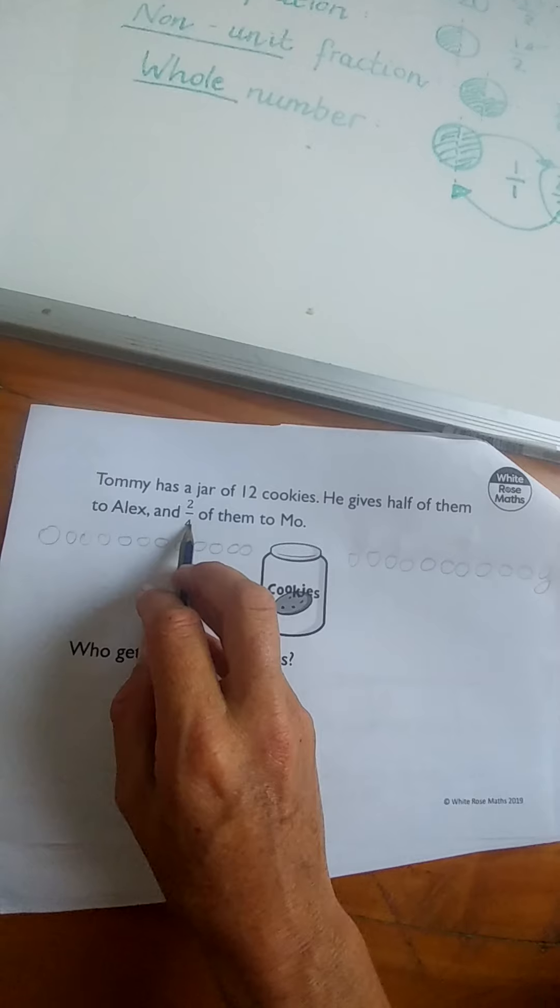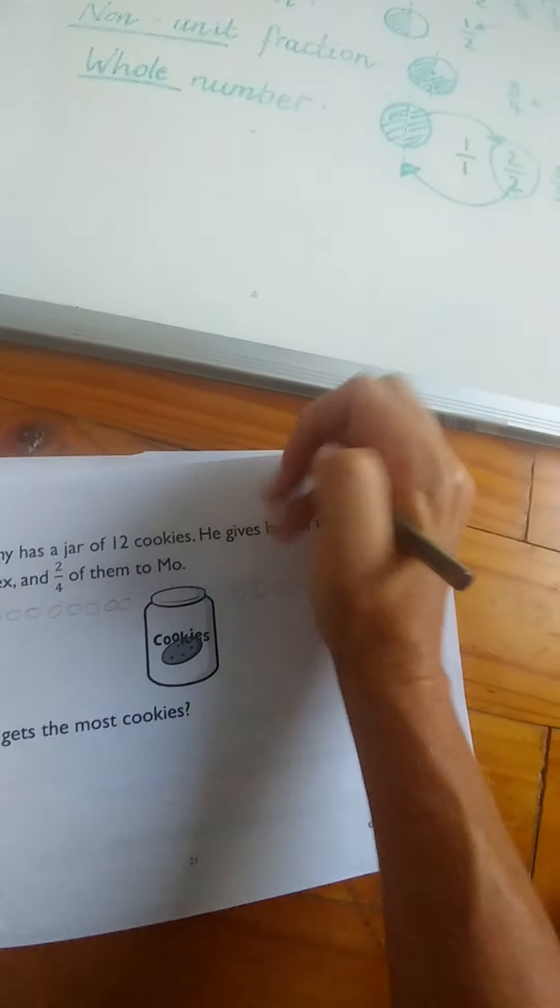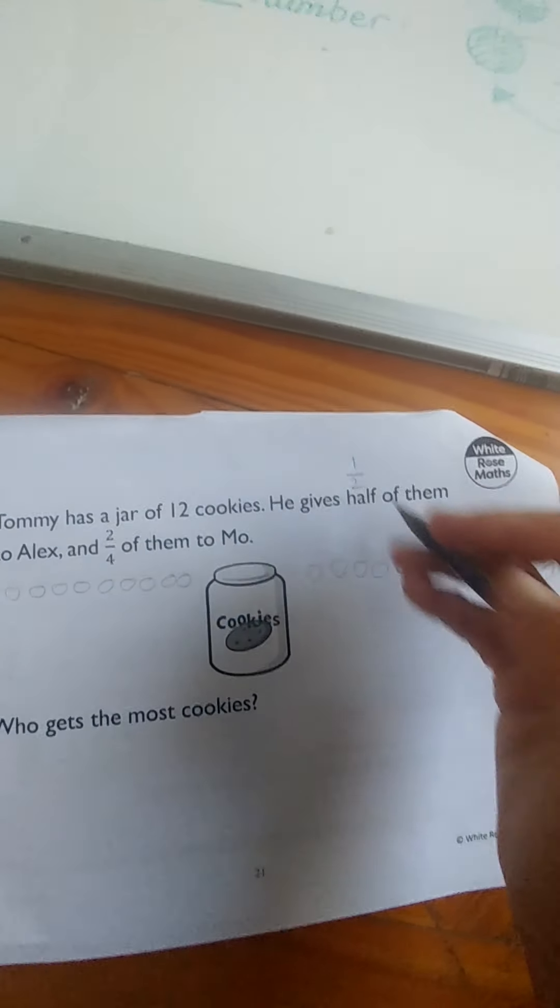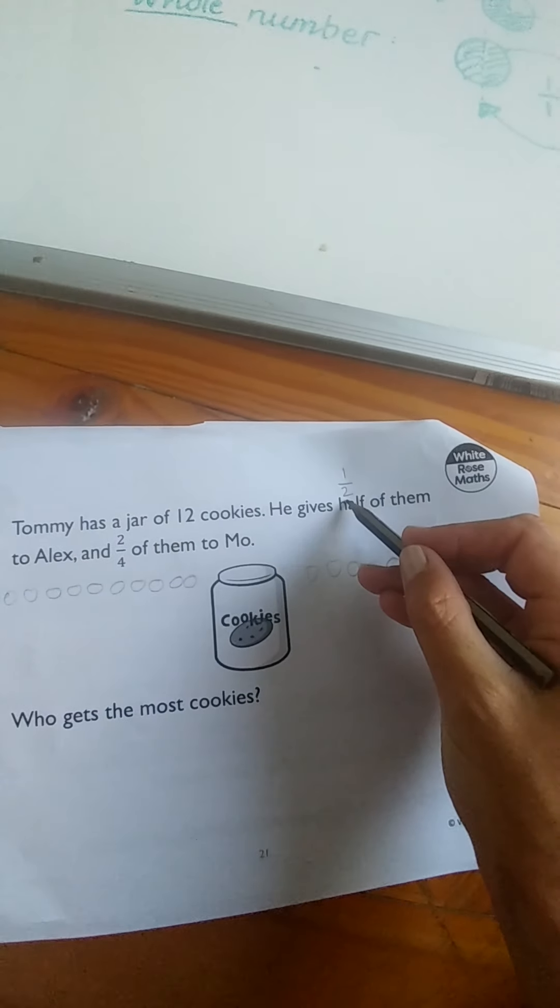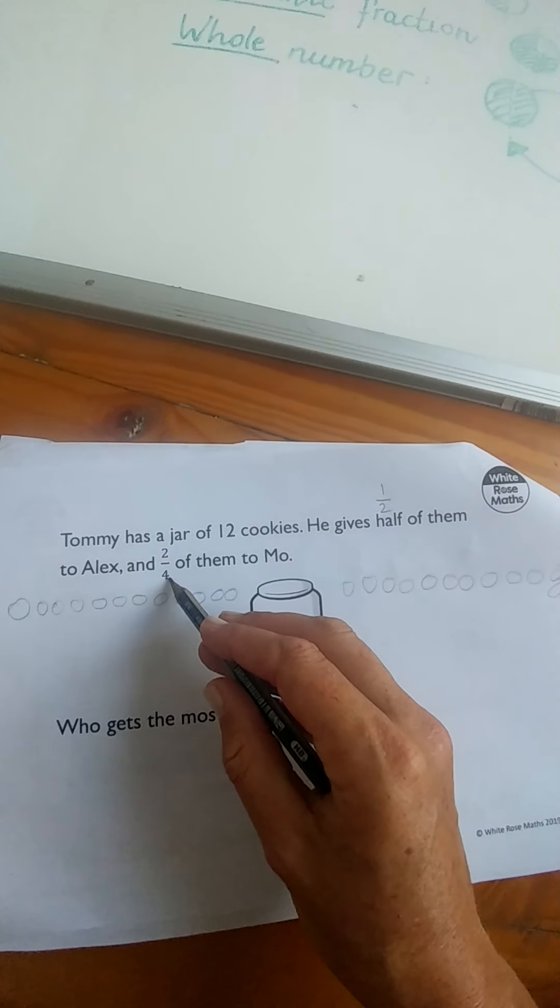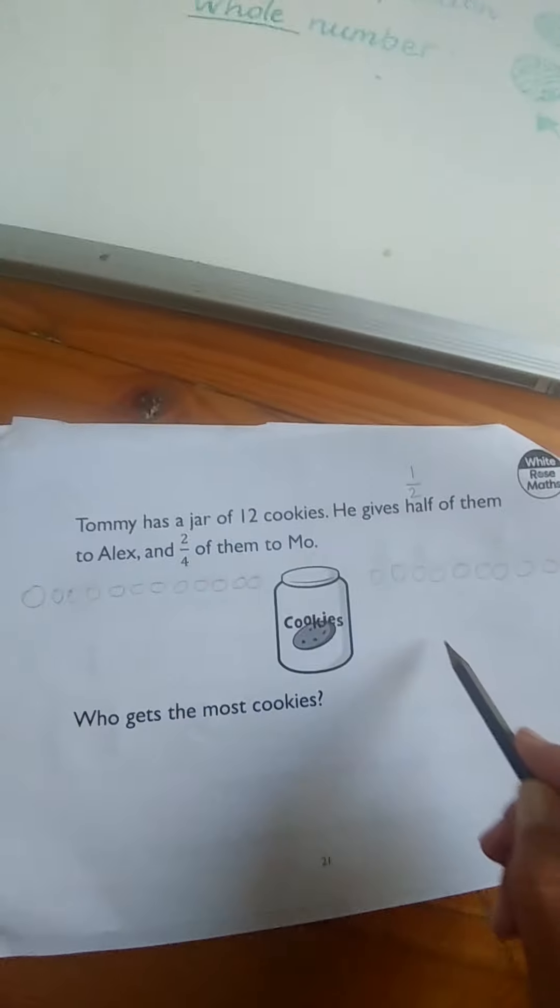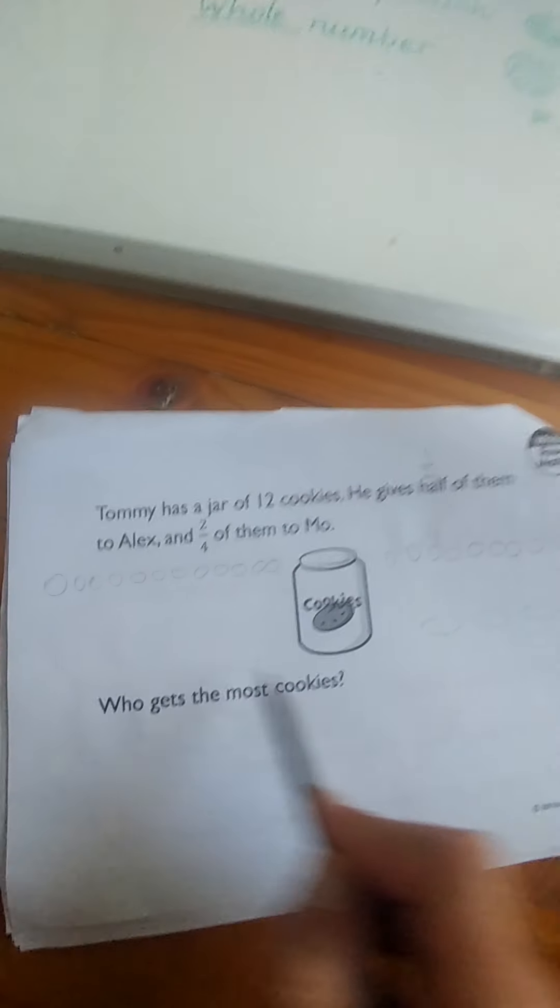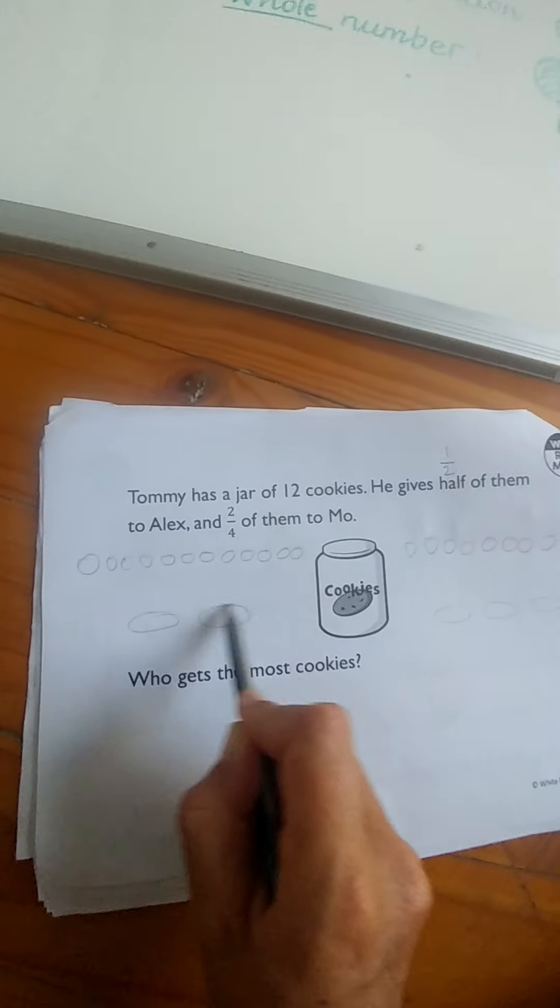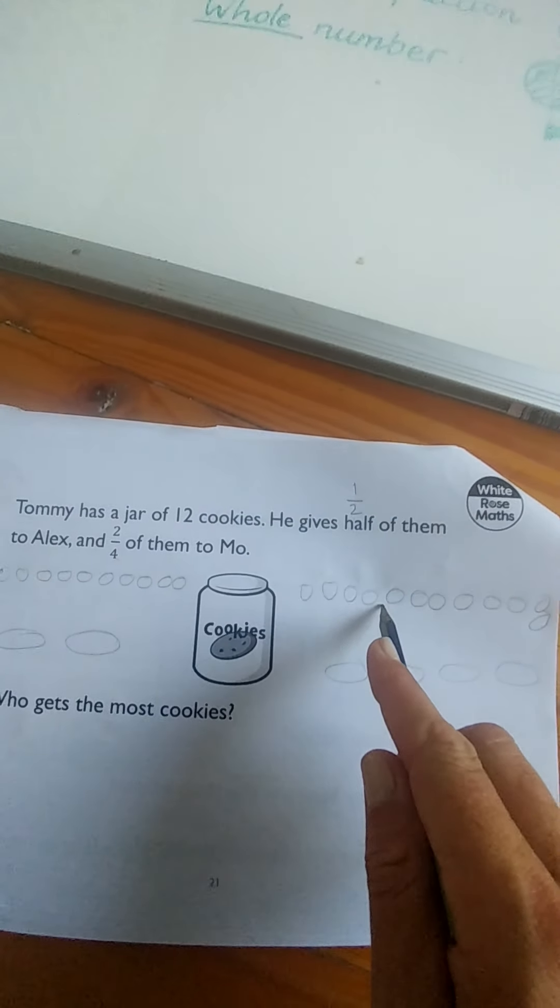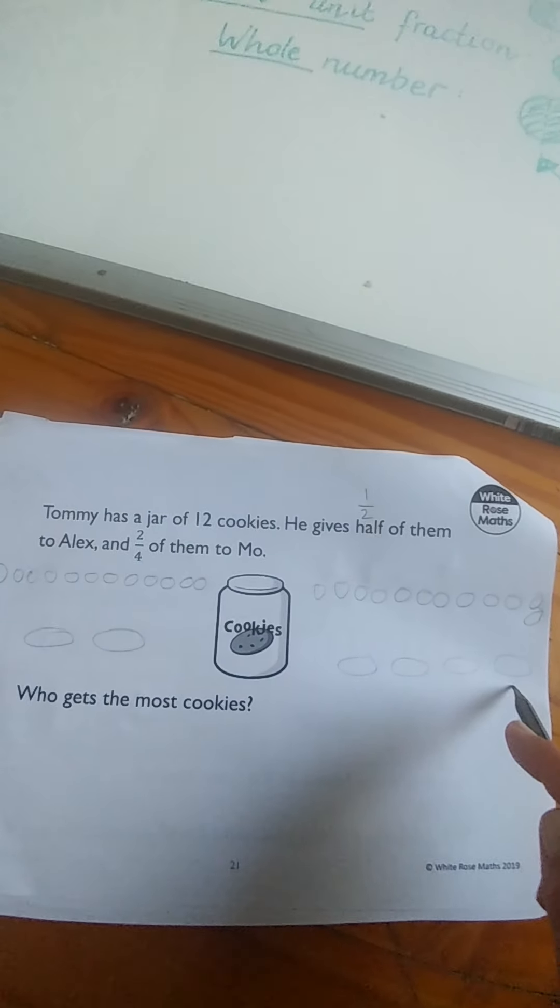And we're going to do two-fourths of them. So half of them, how do we write a half? Like this, right. That means we need two groups here. We need four groups. Okay, so one, two, three, four. And here we need two. We're going to sort our 12 cookies into two groups and then we're going to sort these 12 into four groups.